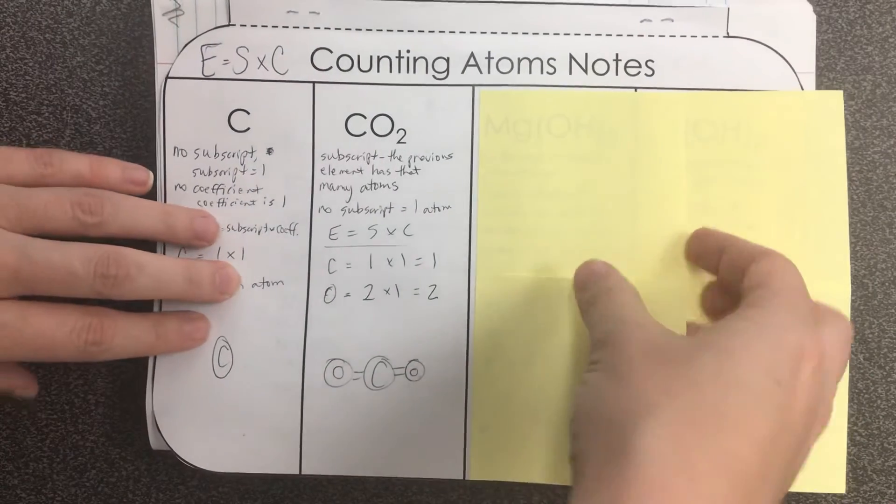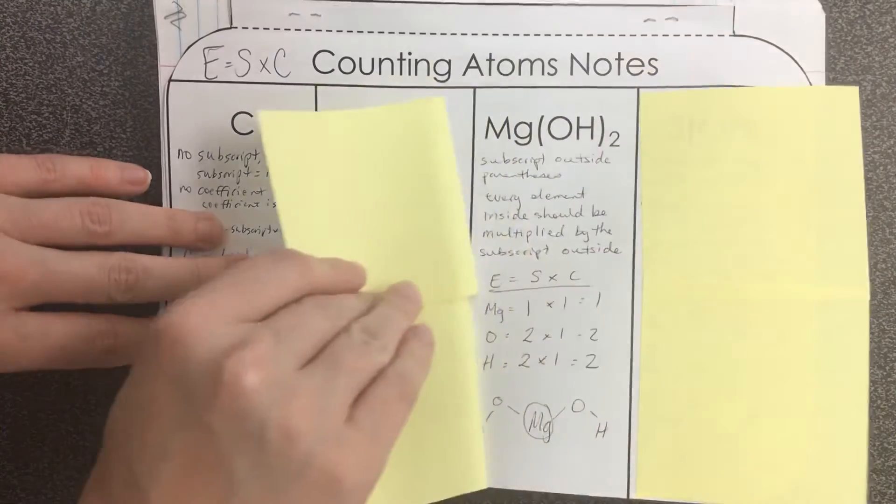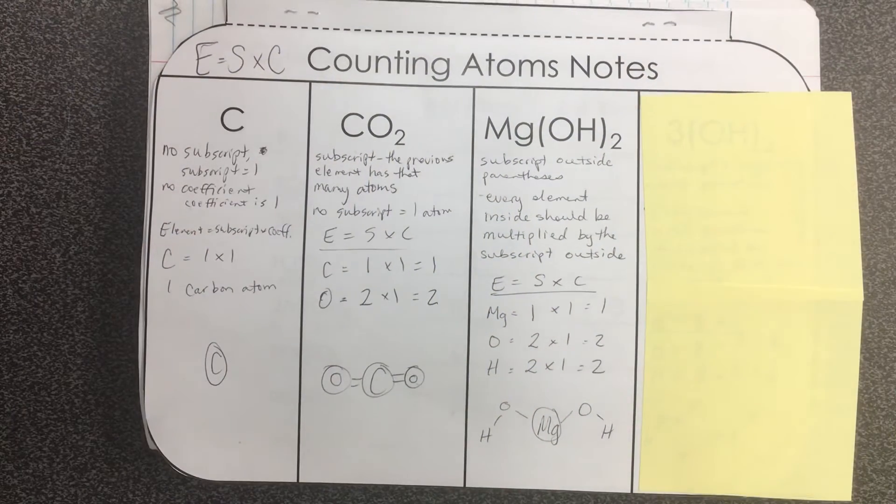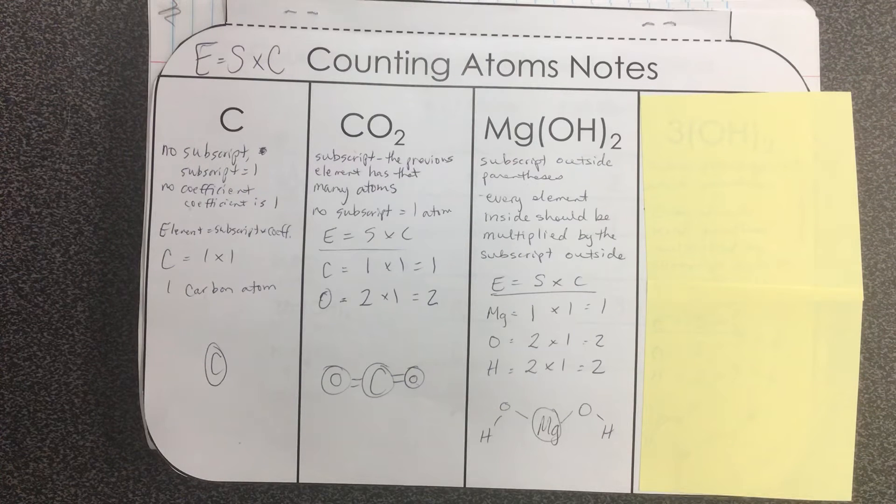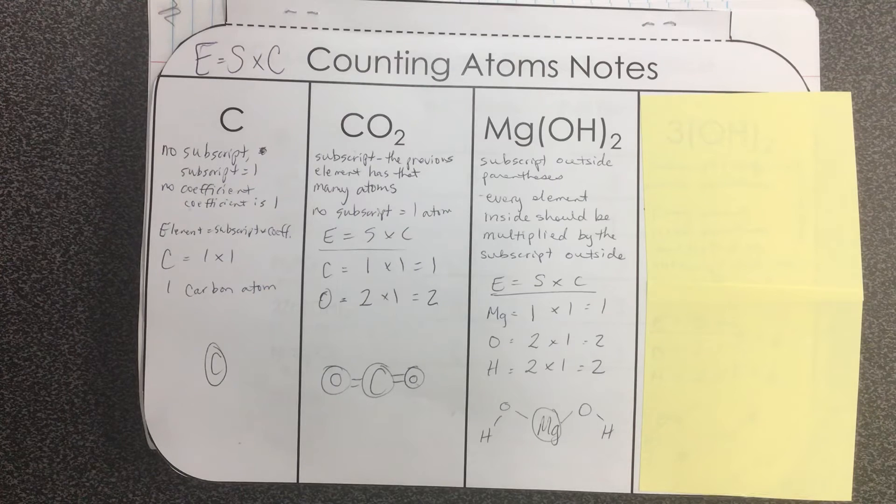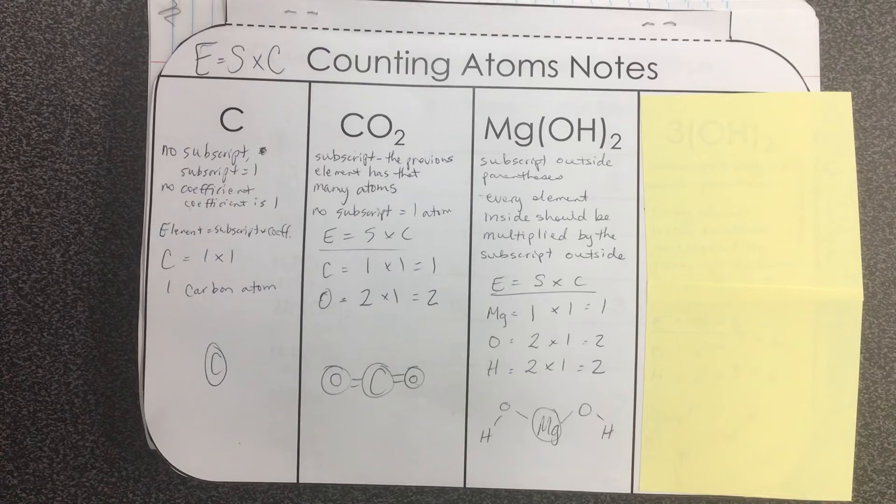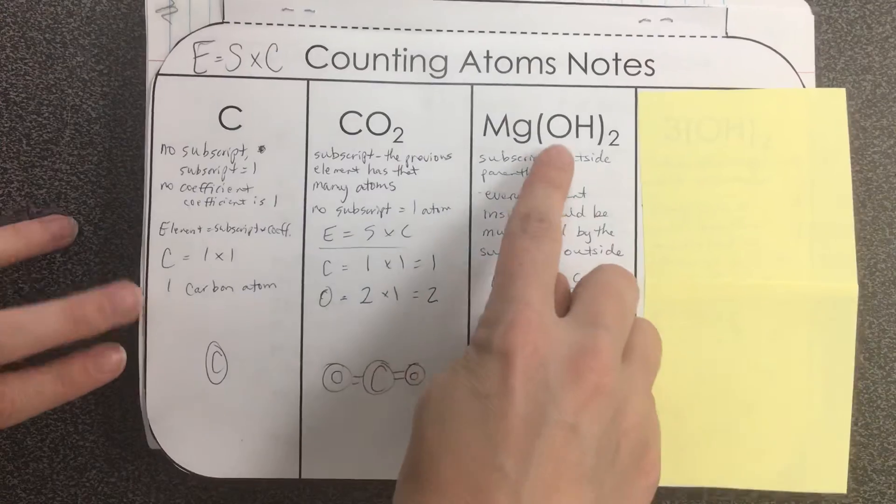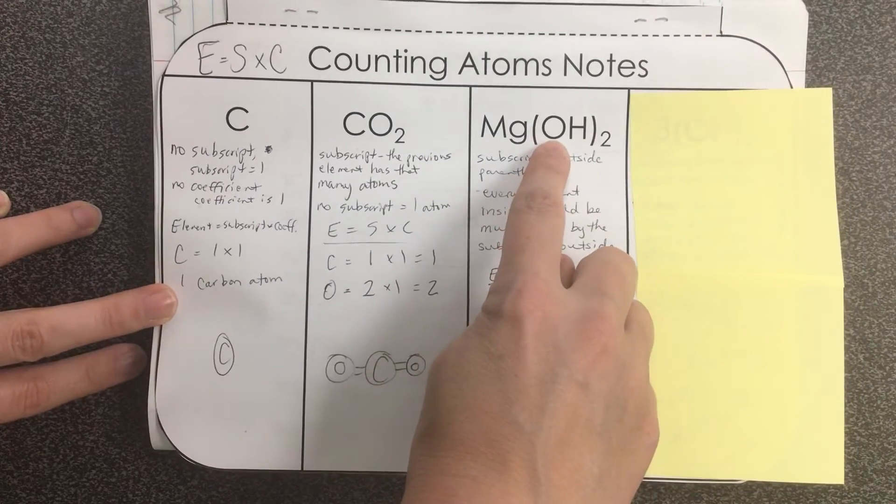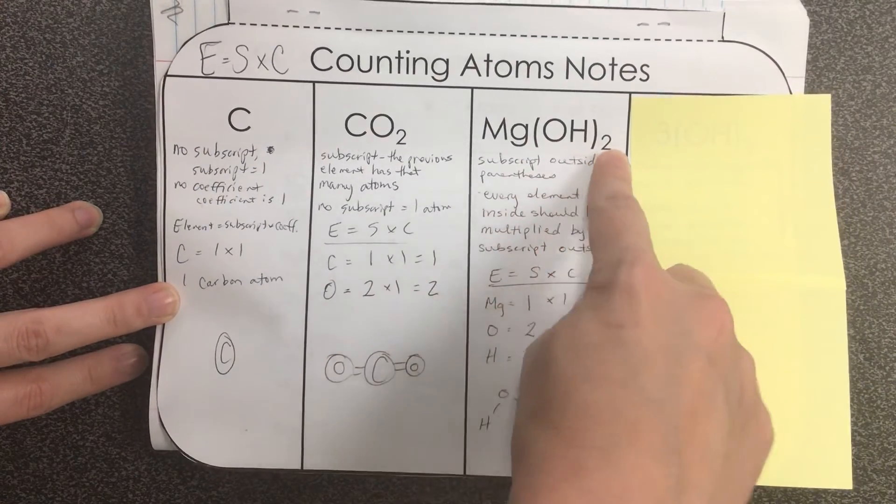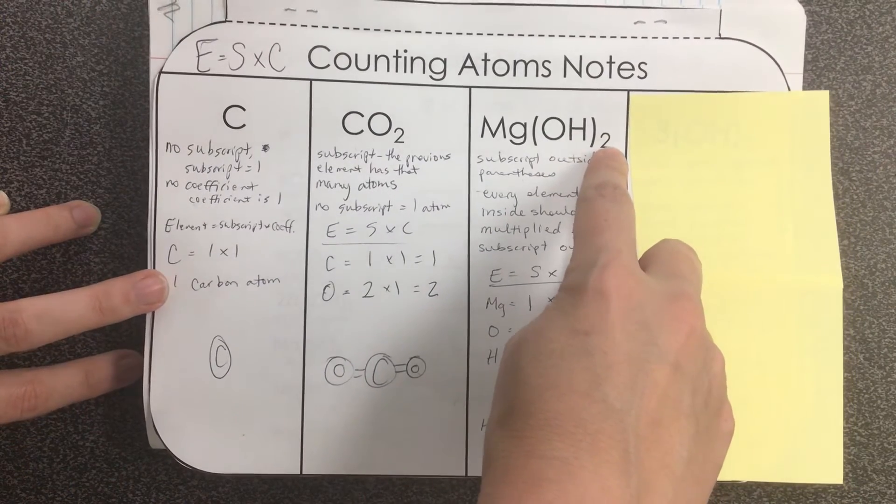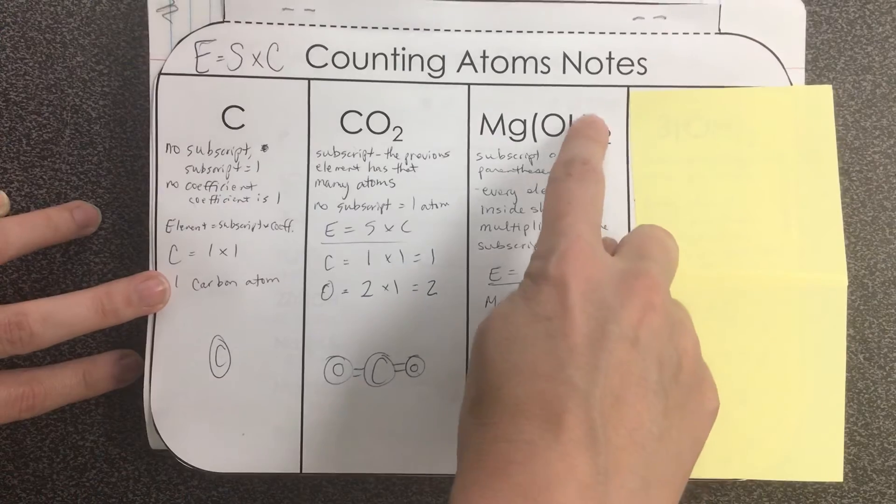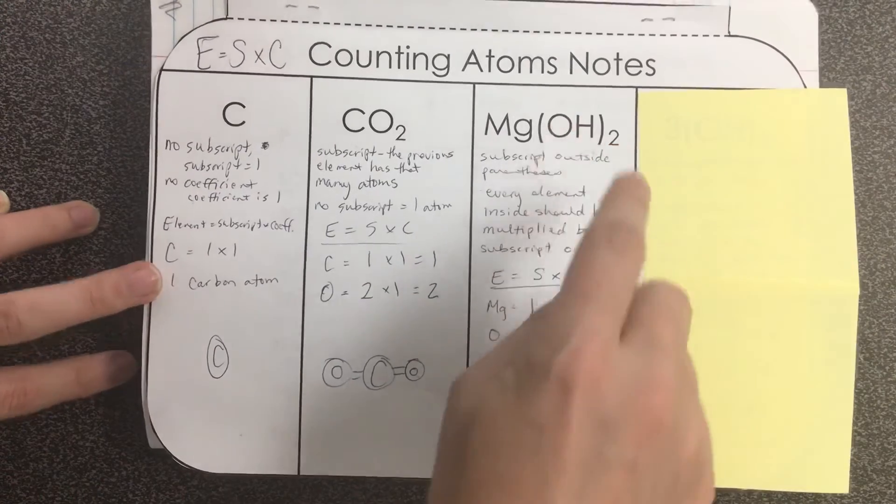Now sometimes you're going to have parentheses. Parentheses will set apart some parts of the molecule from others as for counting. So in this case we have parentheses around OH and a two is a subscript outside of it. So what this means is this two subscript is going to apply to all the elements within the parentheses.